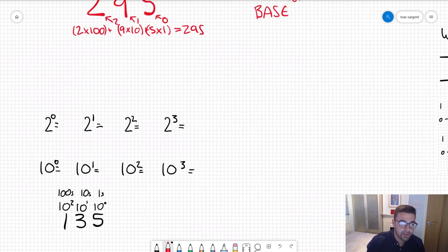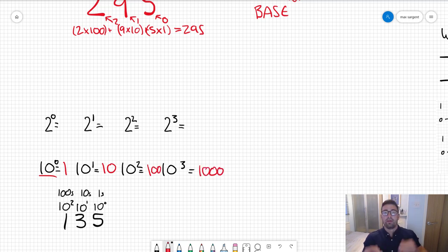If we go down here we can work these out. We've got 10, which is our base, to the index zero, that's one. Then here 10 to the 1 is 10, 10 to the 2 is 100, 10 to the 3 is 1000.